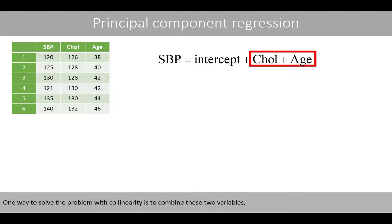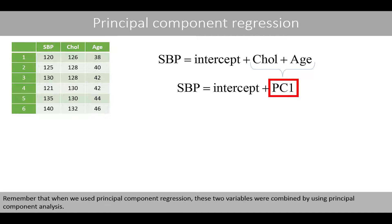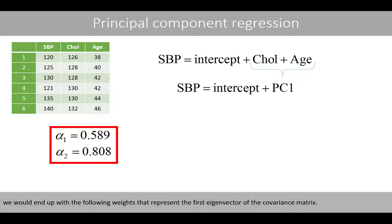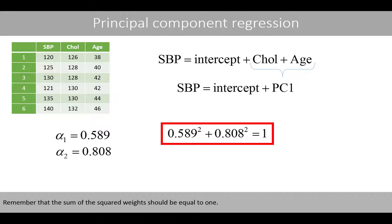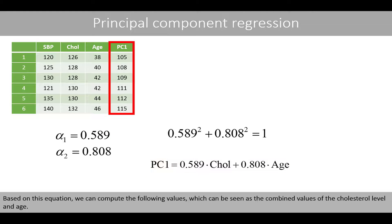One way to solve the problem with collinearity is to combine these two variables into just one variable. Remember that when we used principal component regression, these two variables were combined by using principal component analysis. If we perform PCA on these two variables, we would end up with the following weights that represent the first eigenvector of the covariance matrix. Remember that the sum of the squared weights should be equal to 1. Based on these two weights, we can calculate the first principal component and compute the following combined values of the cholesterol level and age.